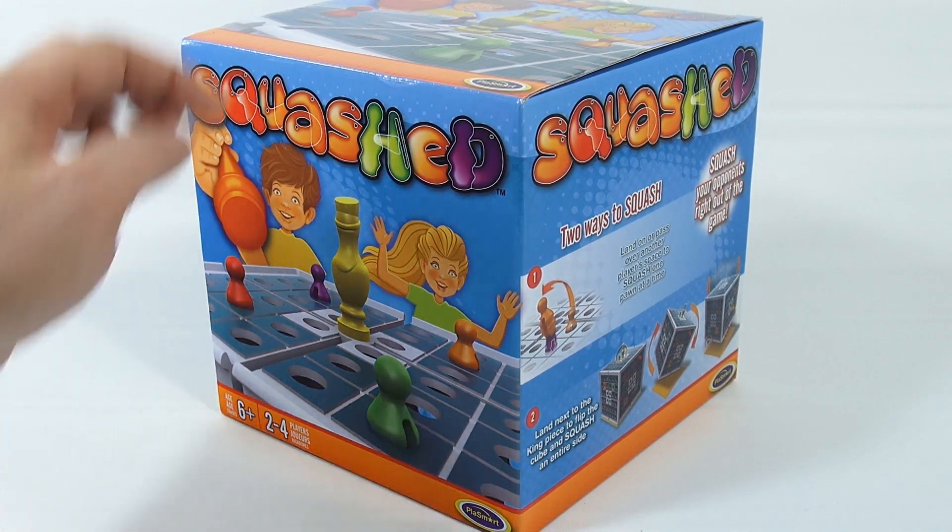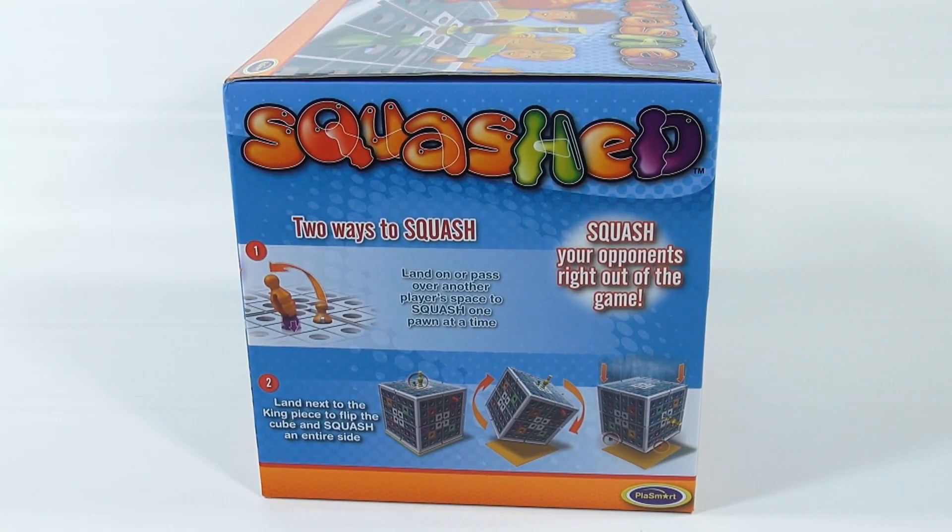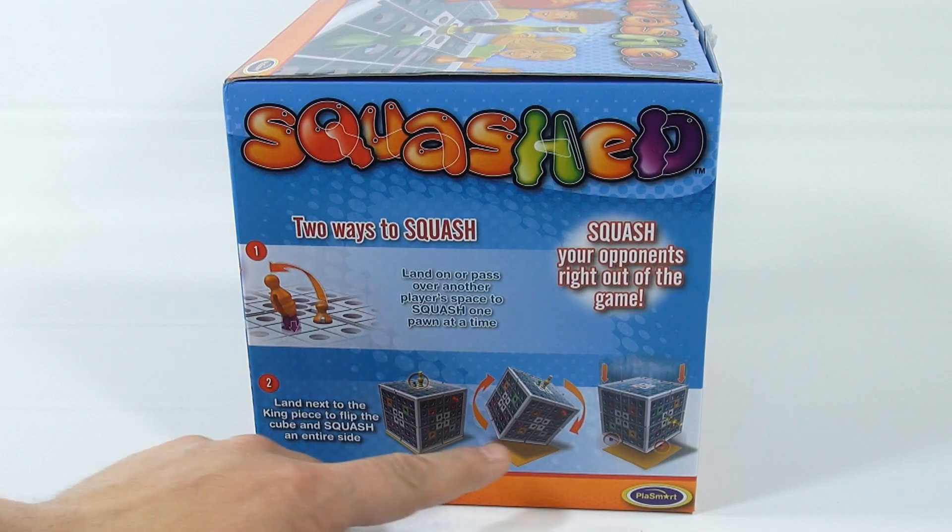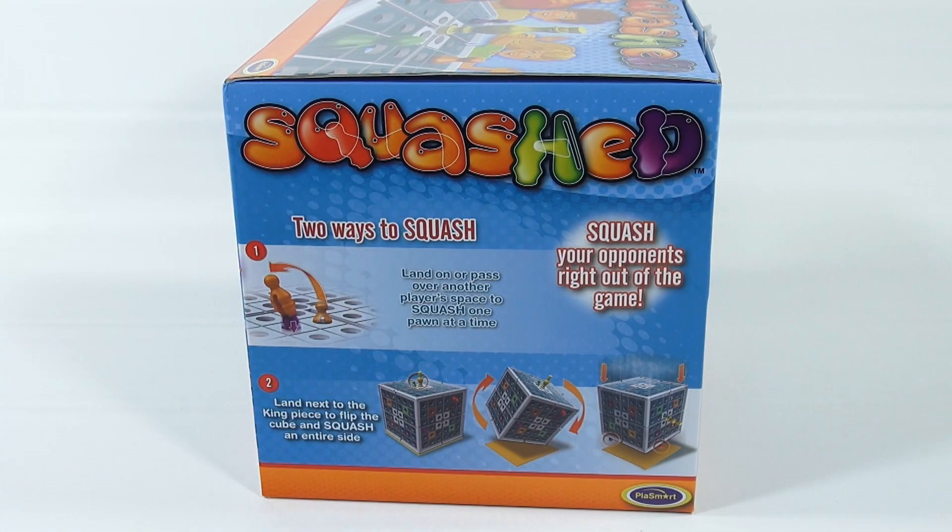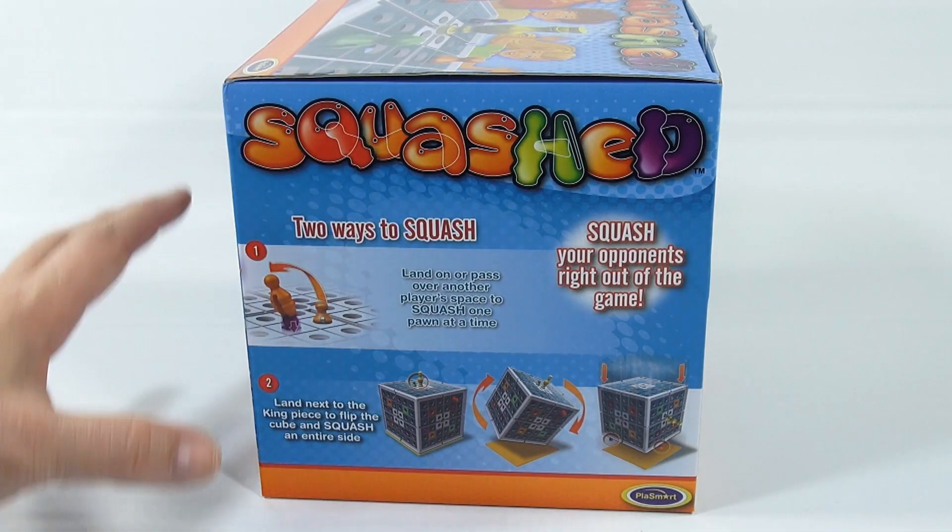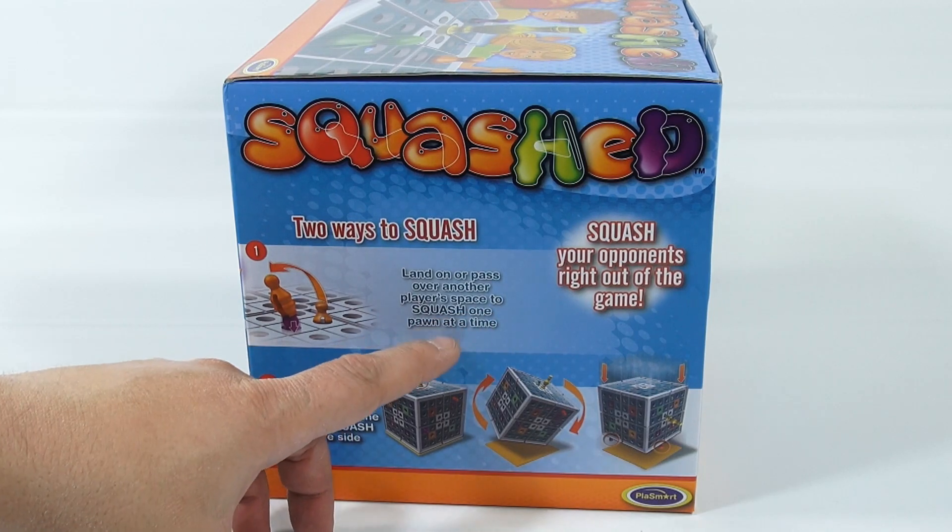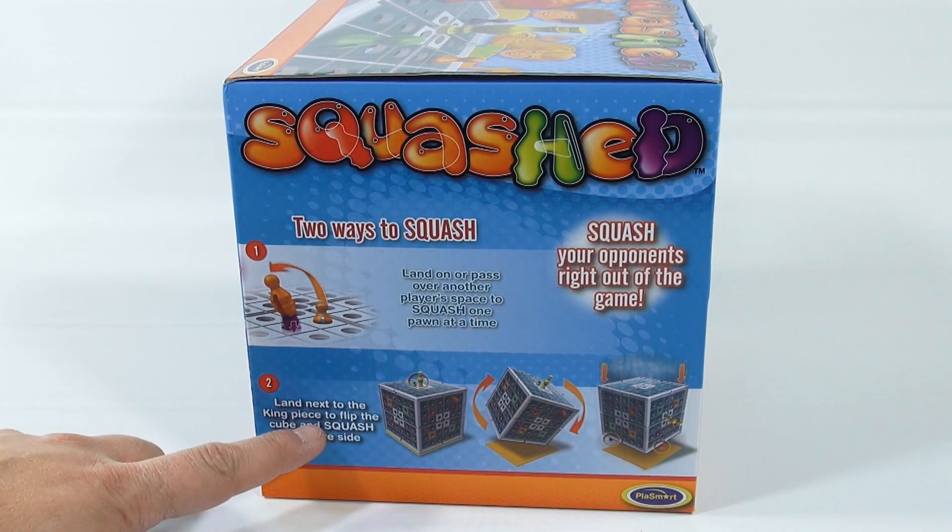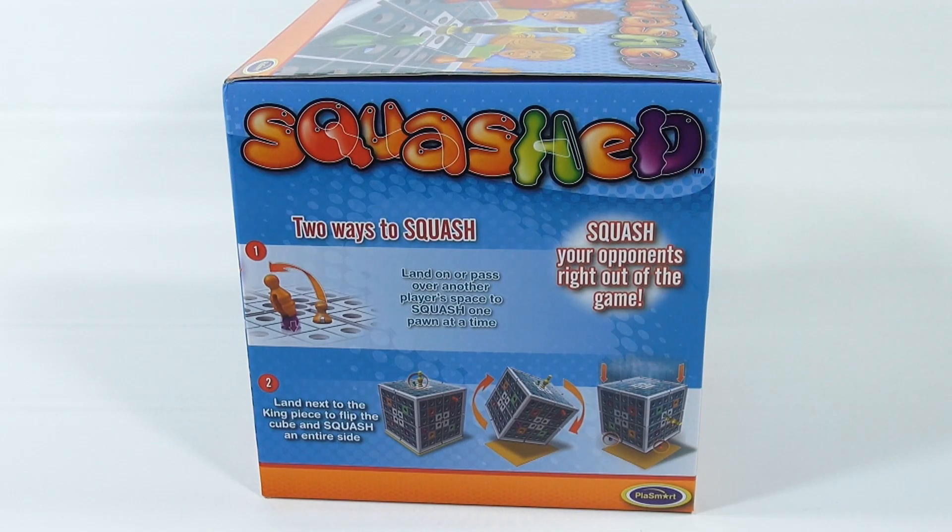It's for ages 6 plus, 2 to 4 players, and what I think of it is like a king of the hill or a last man standing. But the neat thing about this is that you're playing on all sides of the cube, and you can move your pieces in all different directions. So basically you can land on or pass over another player's space to squash one pawn at a time. Land next to the king piece to flip the cube and squash an entire side.